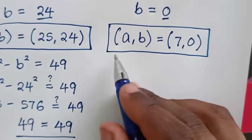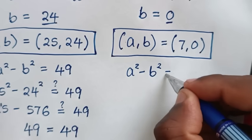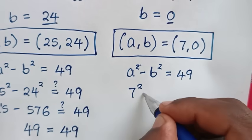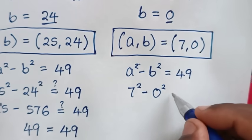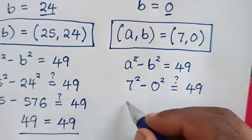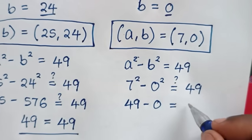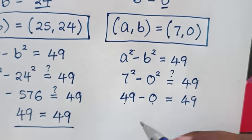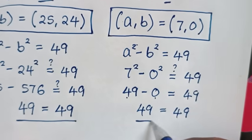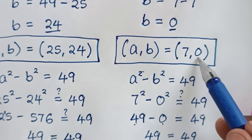Now checking the second solution: from a squared minus b squared equals 49, we have 7 squared minus 0 squared. Now 7 squared is 49, minus 0 squared which is 0, equals 49. Because 49 minus 0 is 49, which equals 49. Left side and right side are equal — it is true for the second solution, a comma b equals 7 comma 0.